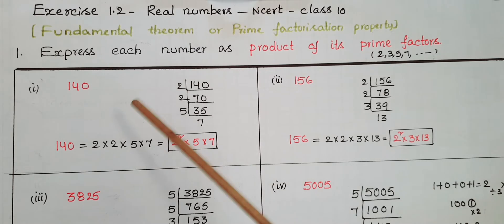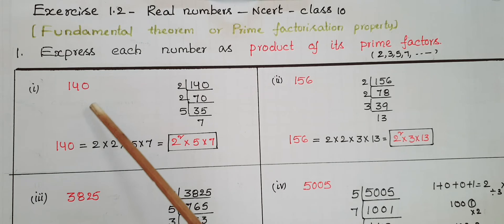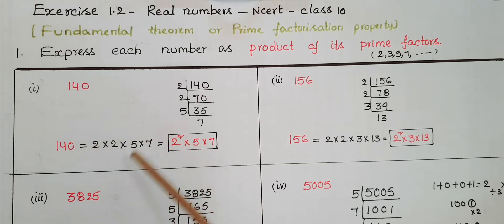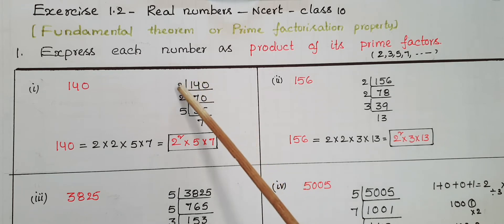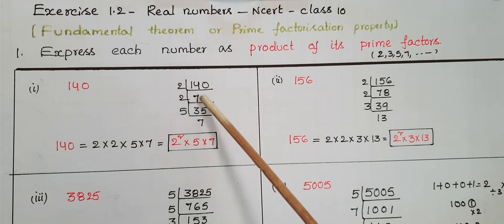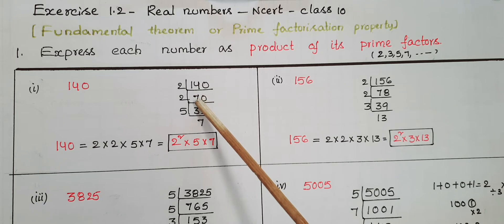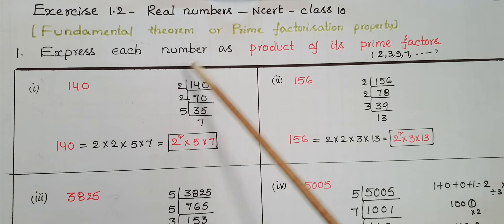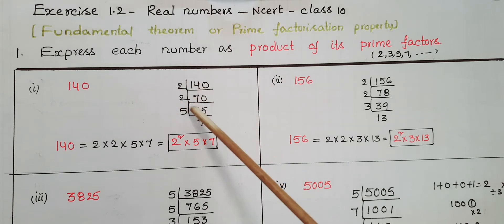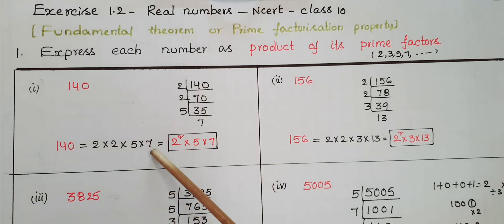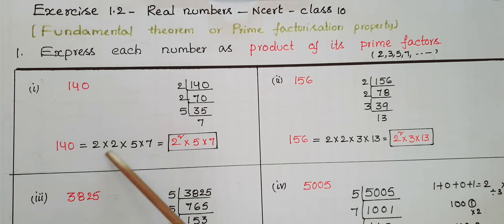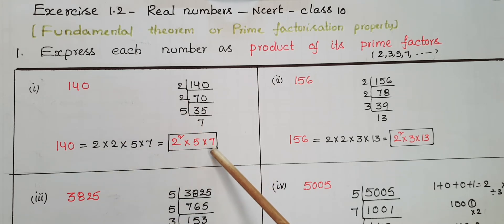The first number is 140. Since 140 is a composite number, we can express it as a product of prime factors. Dividing 140 by 2 gives 70, then 70 equals 2 into 35, and 35 equals 5 into 7. So the prime factors are 2, 2, 5, and 7. Therefore, 140 equals 2 squared into 5 into 7.